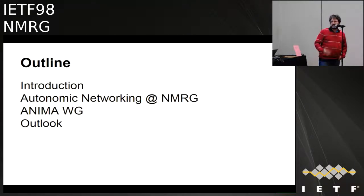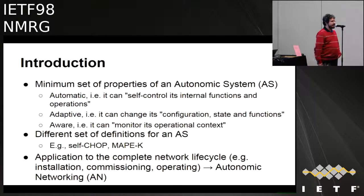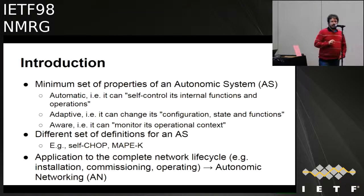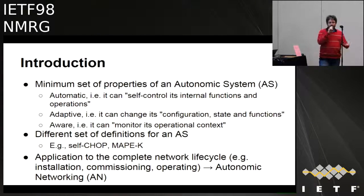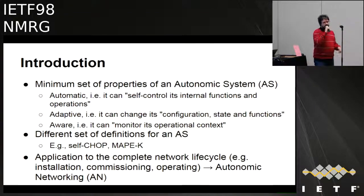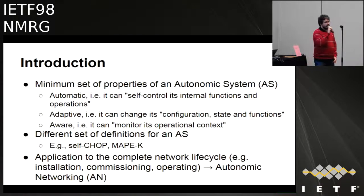There is a known set of properties that we expect in an Autonomic System. It is expected to be automatic, adaptive, and aware. To define that, there are different sets of properties used — for example, the self-* properties or the MAPE-K — and for our concern, an Autonomic Networking System is the application of these properties in the network lifecycle.